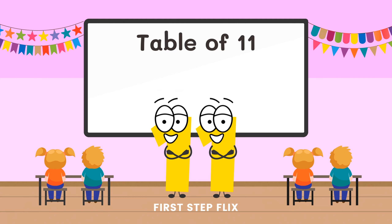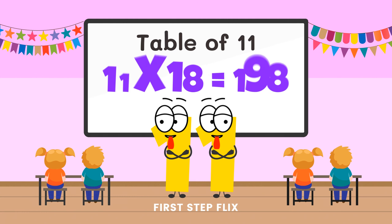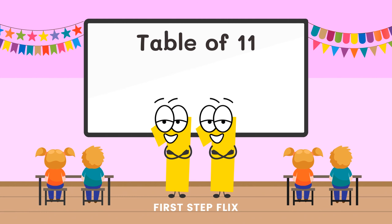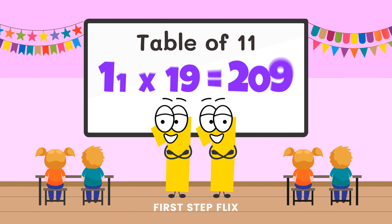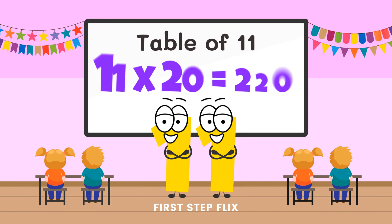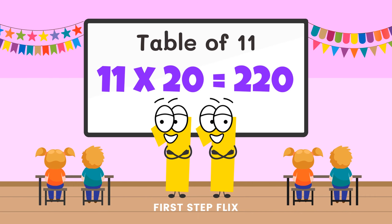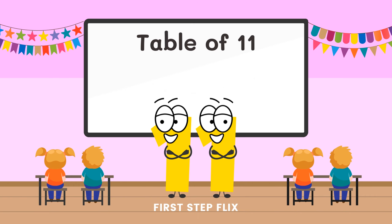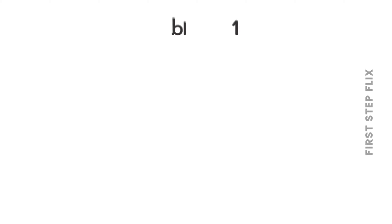11 eighteens are 198. 11 nineteens are 209. 11 twenties are 220. Let's repeat one more time.